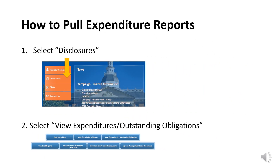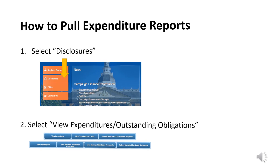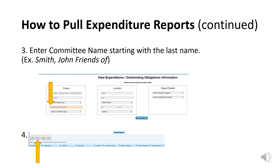Pulling an Excel version of the expenditure report is very similar to pulling contributions. Start by selecting Disclosures, then select View Expenditures/Outstanding Obligations. Enter the committee name in the orange box using the same naming convention referenced in the previous slide, then select Search. When the data populates, select the Excel icon to download.